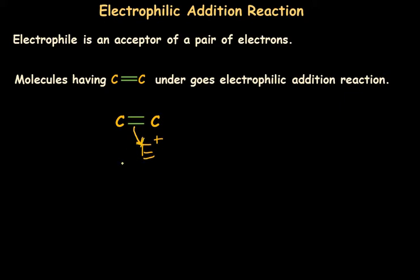These reactions are always addition reactions. The reason is that one of the bonds out of the two double bonds gets broken because of the positively charged electrophile. The electrophile gets added to one of the carbons and the other atom gets added to the other carbon. Let's learn this mechanism in detail with examples.